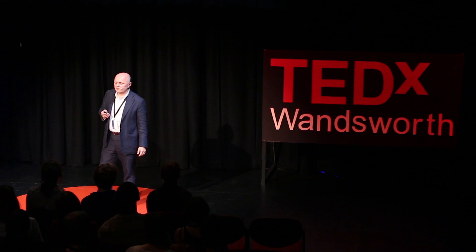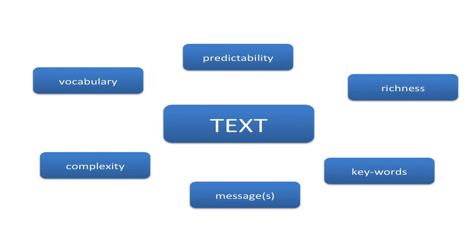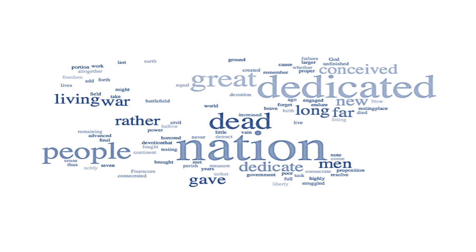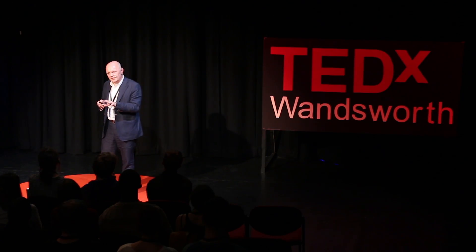I'd like you to focus on three text features. First, the predictability of a text — how easy it is to predict what comes next. Second, the richness of the text — the extent to which the speaker is using new words all the time or reusing old ones. And third, the key words, which give away what the whole message is about. We can draw a graph of the key words of one of the most famous texts in the English language — the Gettysburg Address. Its key words tell us it's about war, nationhood, dedication, death, and people. The density of key words against all the other words gives us an idea of the richness of the vocabulary.